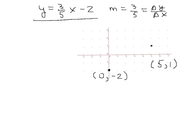We should check to see that (5, 1) satisfies this equation. If x is 5, 3/5 times 5 is just going to be 3, and 3 minus 2 is 1. Looks good.